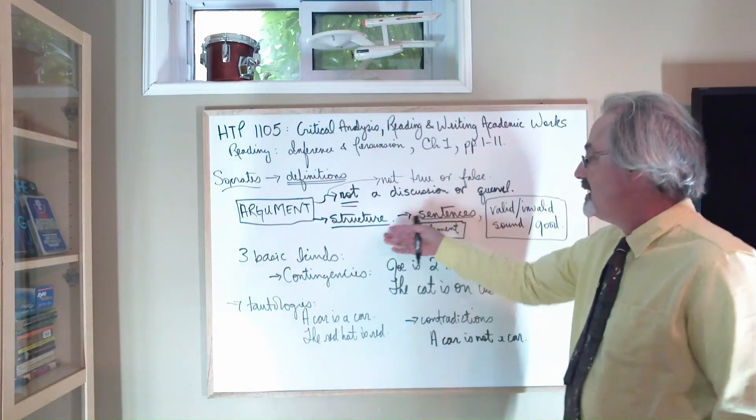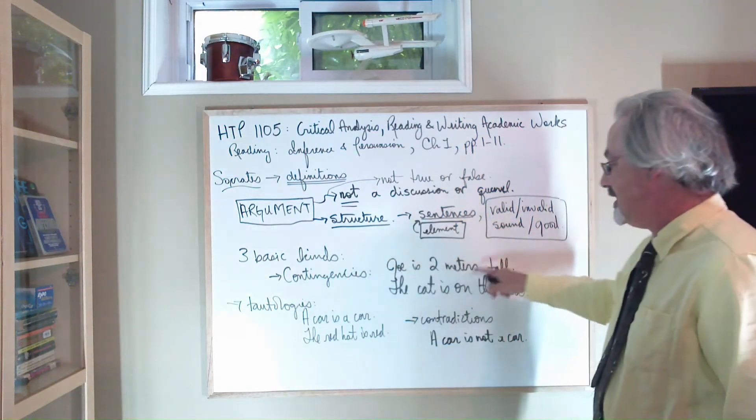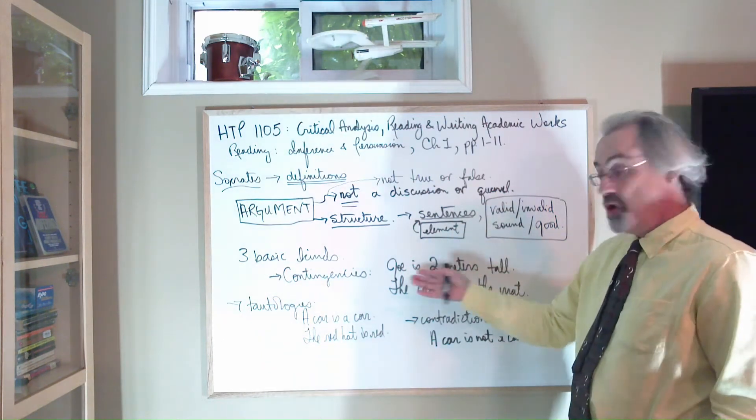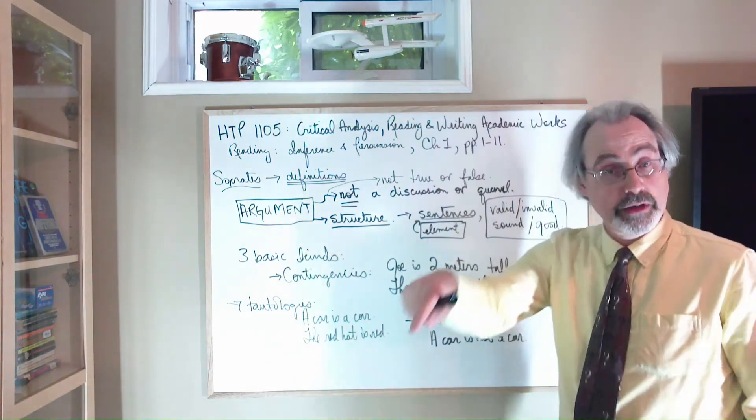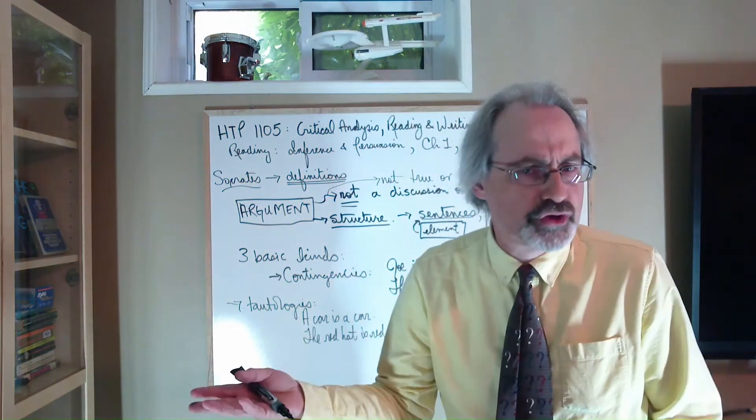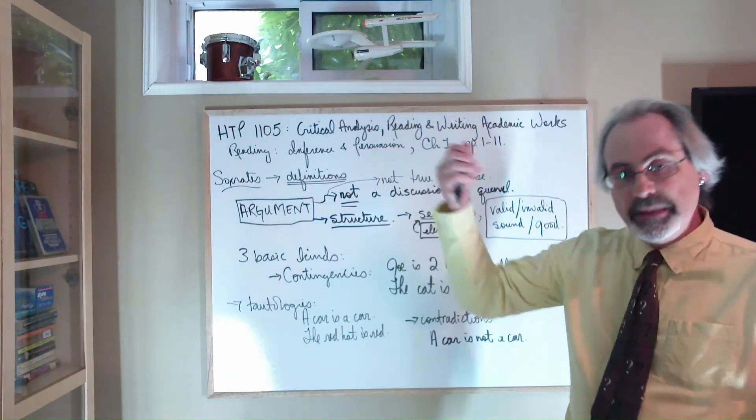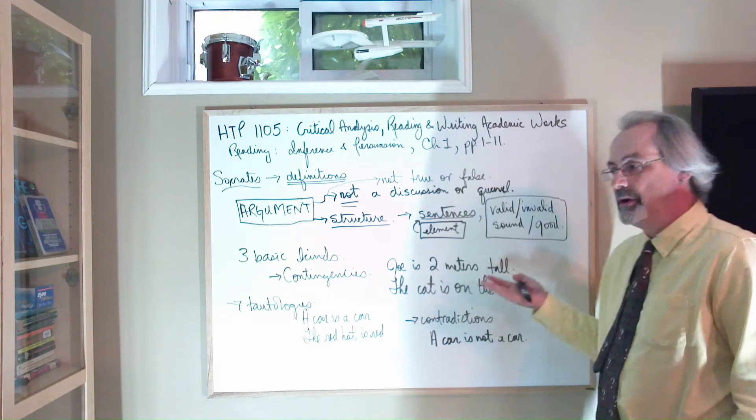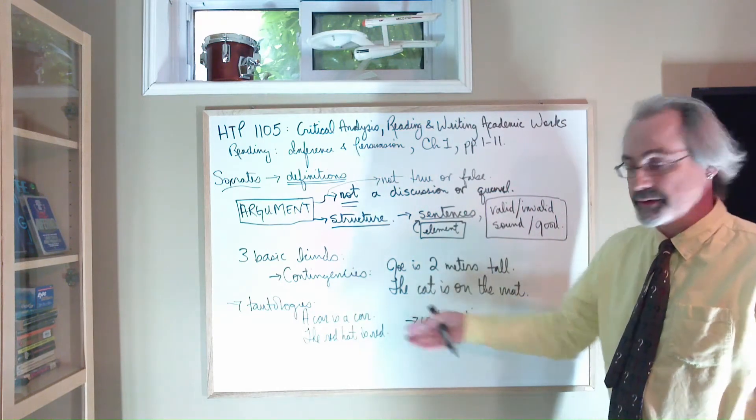Whereas these, these ones, of course, are the interesting ones. They can change their truth value depending on the way the world is, right? So in order to know what their truth value is, you have to go look, right? If I say Joe's two meters tall, you'd say, well, Joe, where is he? And I need a meter stick. Can I go check that out? If that's accurate, what are you talking about? I got to go have a look at the way the world is.